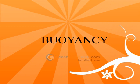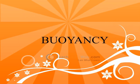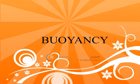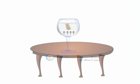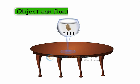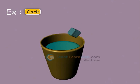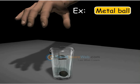Buoyancy is the upward force that makes an object float. An object can float when it is lighter than water, for example, a cork. An object can sink when it is heavier than the water, for example, a metal ball.